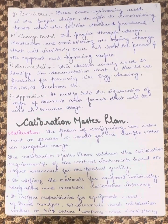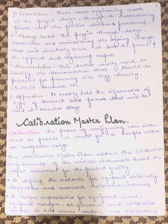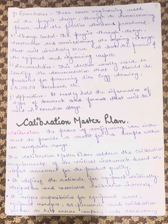Next is procedure. These cover engineering used in the project design through the commissioning phases and the facility's standard procedures. Next we have change control, covering the project through design, construction, and commissioning — the ongoing changes that will inevitably occur in both the process, equipment, and engineering aspects.